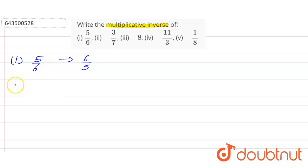Now the second one, it's -3/7. As I told you, the sign also remains the same. So the multiplicative inverse of -3/7 will be -7/3.